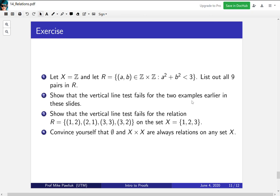Let's end with some exercises and reflections. So the first exercise is take X to be the integers, and let R be the relation where a² + b² is strictly less than 3. List out all 9 pairs in this relation. Second, show that the vertical line test fails for the two examples earlier on in these slides. Three, show that the vertical line test fails for this relation on the set X equals {1, 2, 3}. Finally, convince yourself that the empty set and X are always relations on any set X.